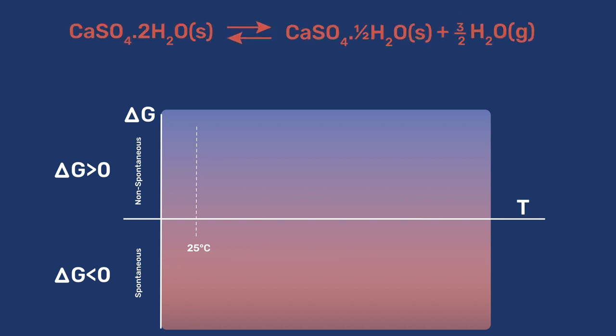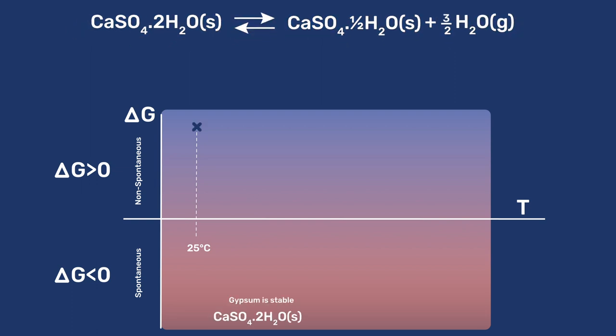At 25 degrees Celsius, the decomposition of gypsum to hemihydrate and water is non-spontaneous. So delta G is positive, and gypsum is the stable phase.